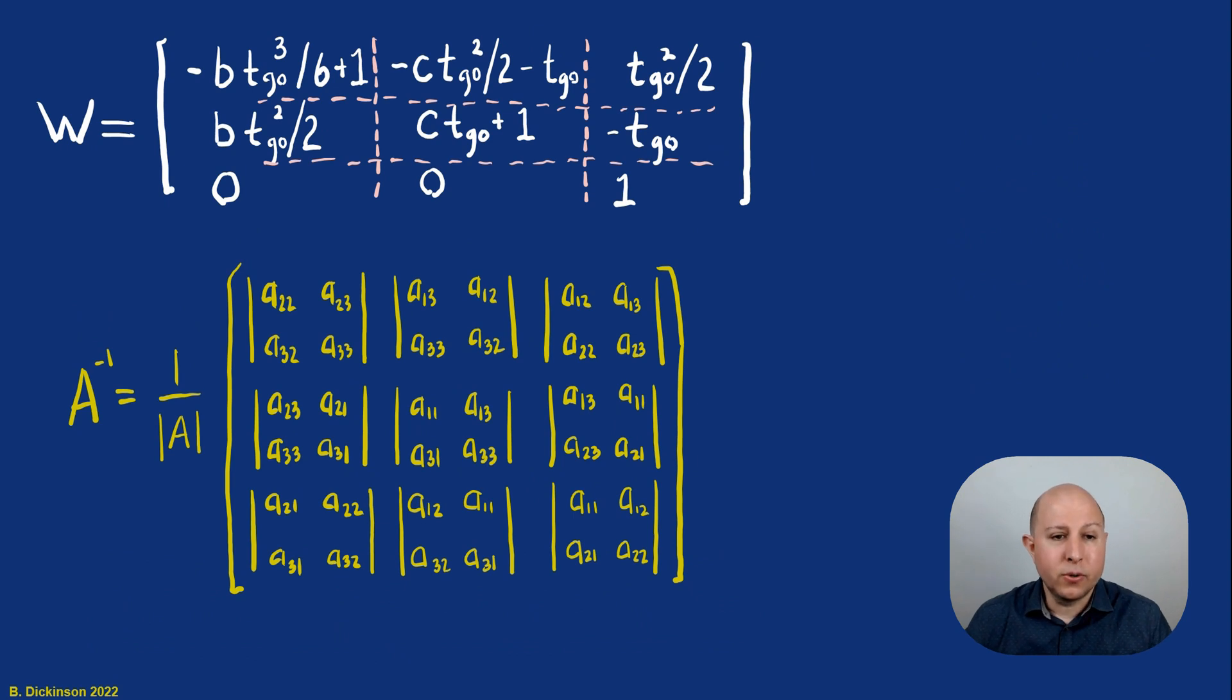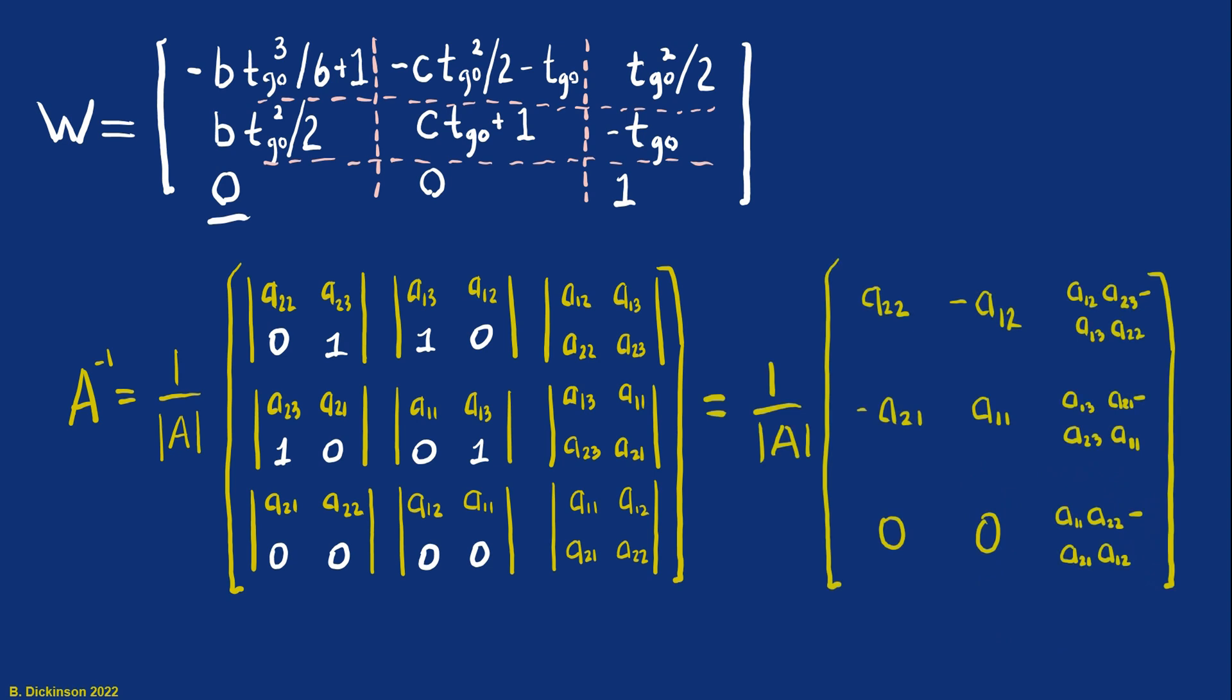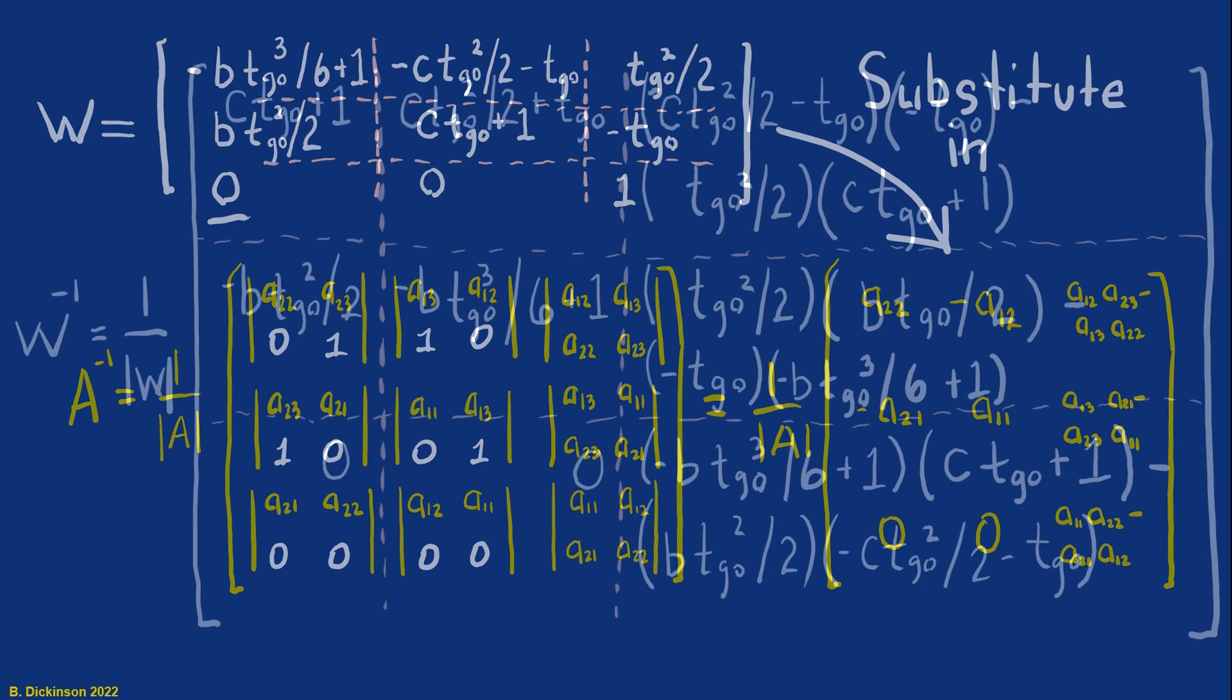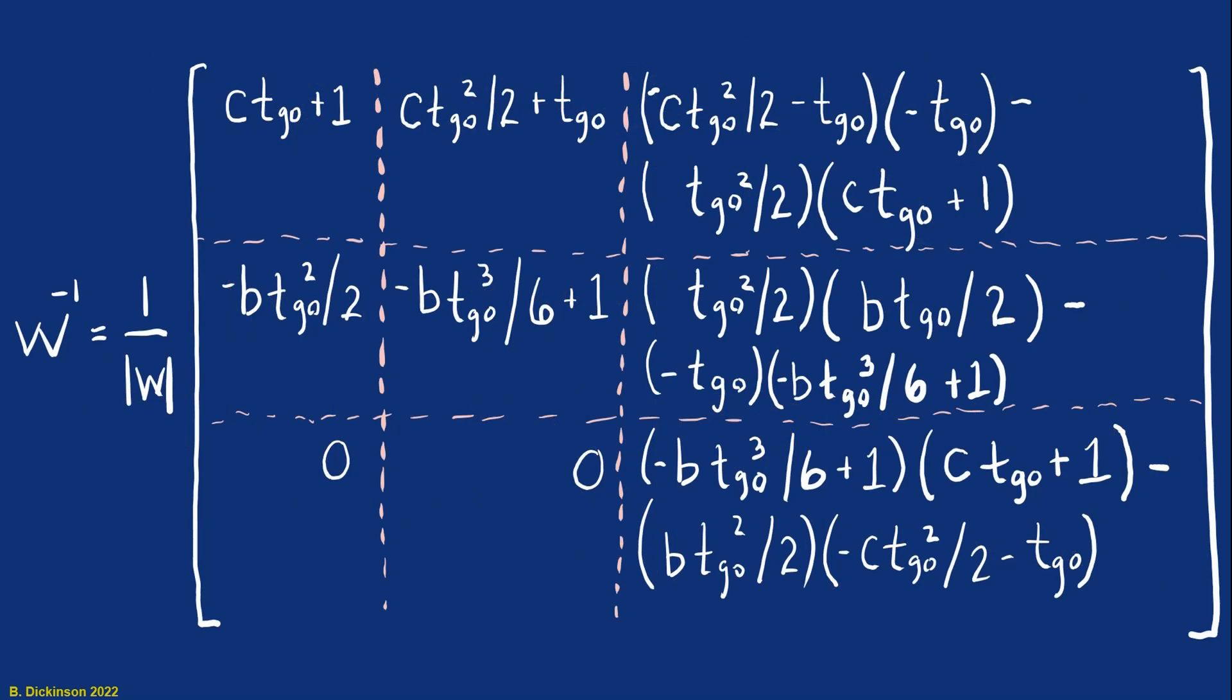And then now the adjoint. A good place to start is with the simple stuff, the ones and the zeros. It'll help simplify it a bit. Now we need to take those elements of W and put them into that matrix appropriately. So this process of substituting gives us then the inverse of W. We have the adjoint in the braces multiplied by one over the determinant that we determined previously.